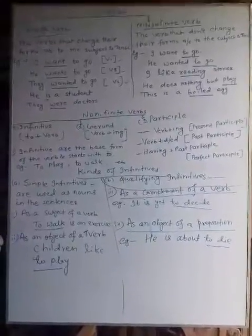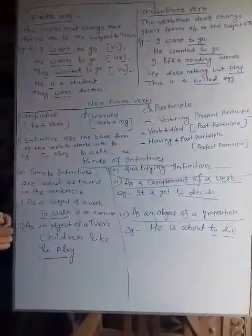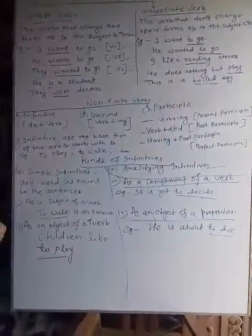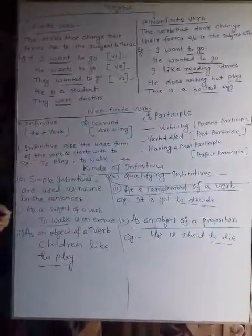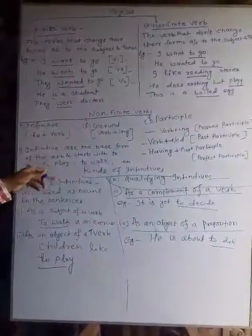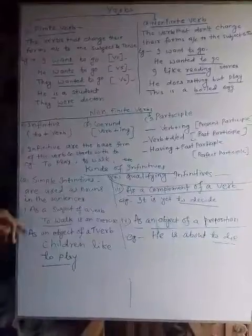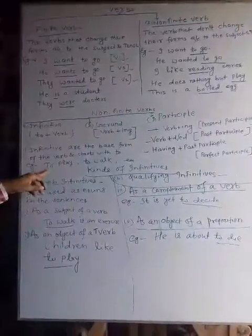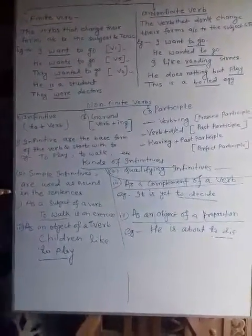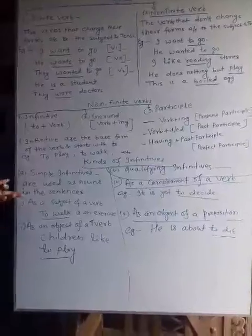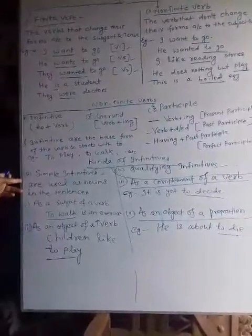Now let's see what is infinitive. Infinitives are the base form of the verb that starts with 'to'. For example, to play, to walk. Now see the kinds of infinitives.